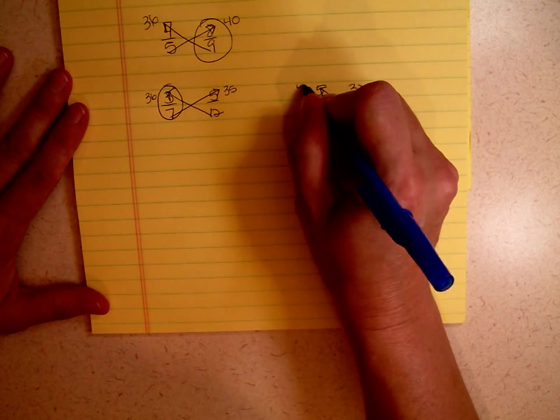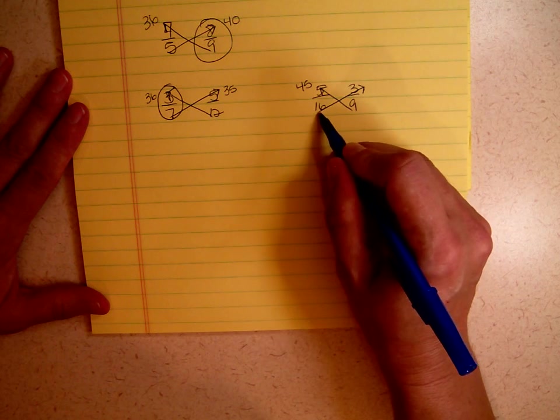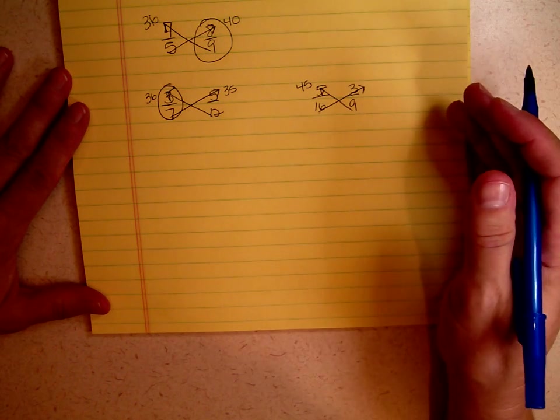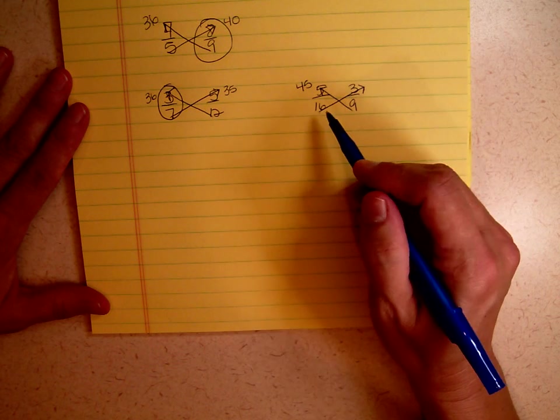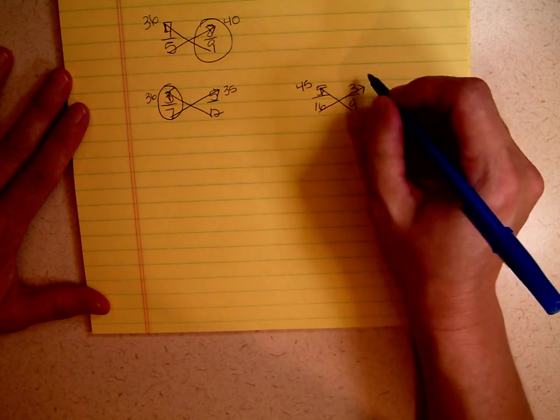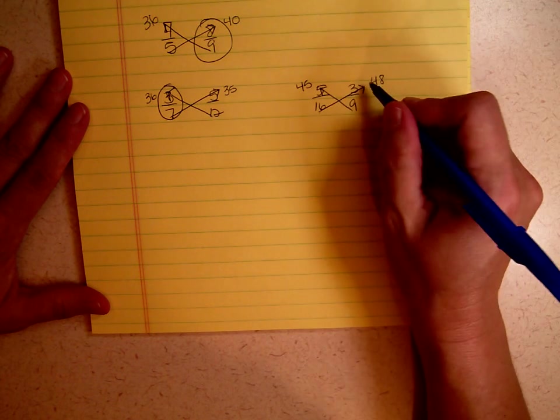9 times 5 is 45. And 16 times 3, while I'm not positive what 16 times 3 is, I know 15 times 3 is 45, and then I have to add 3 more because 16 is 1 more than 15. So that must be 48. Which is bigger?